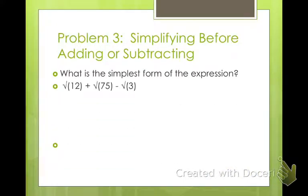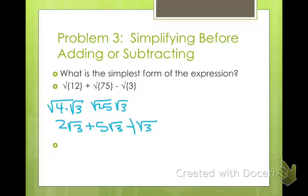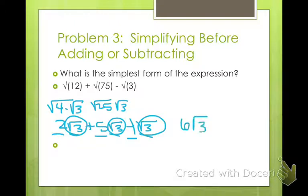What's the simplest form of the expression? Your first thought when you look at all these is you can't add them because they don't have the same radicand. But if we can simplify first, a lot of times we can add together. Square root of 12 equals square root of 4 times square root of 3, which is 2 square root of 3. Square root of 75 equals 5 square root of 3, and this is negative 1 square root of 3. So 2 plus 5 minus 1 all with radical 3 gives us 6 radical 3.